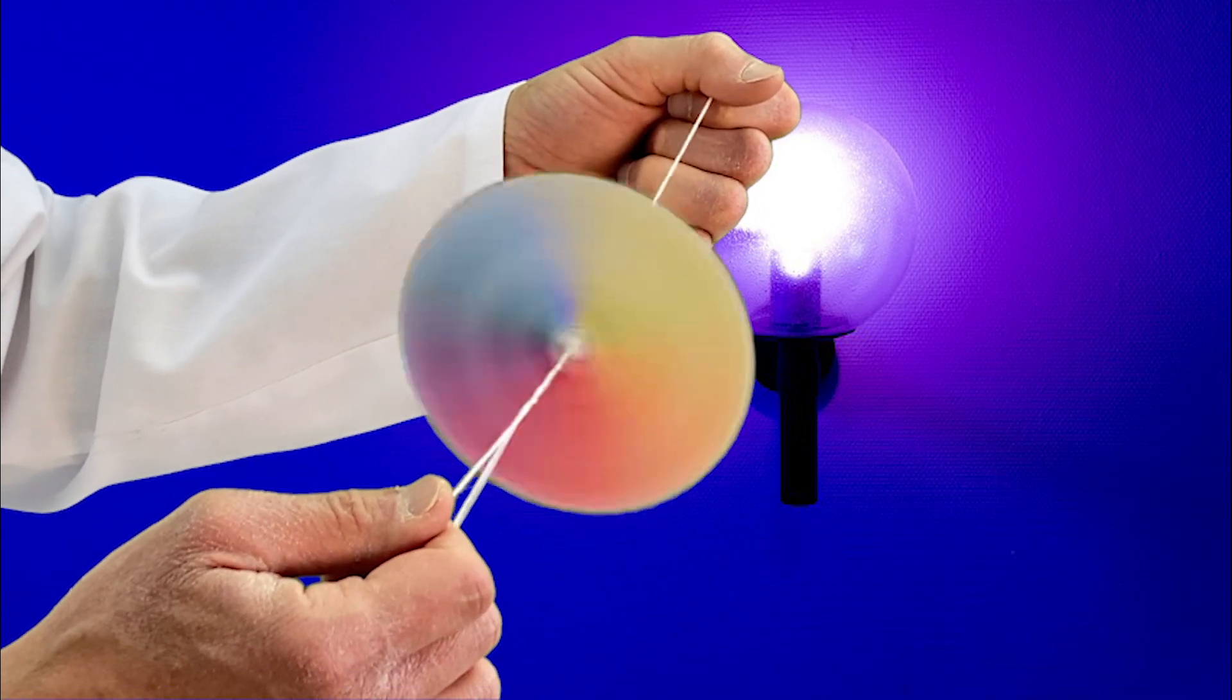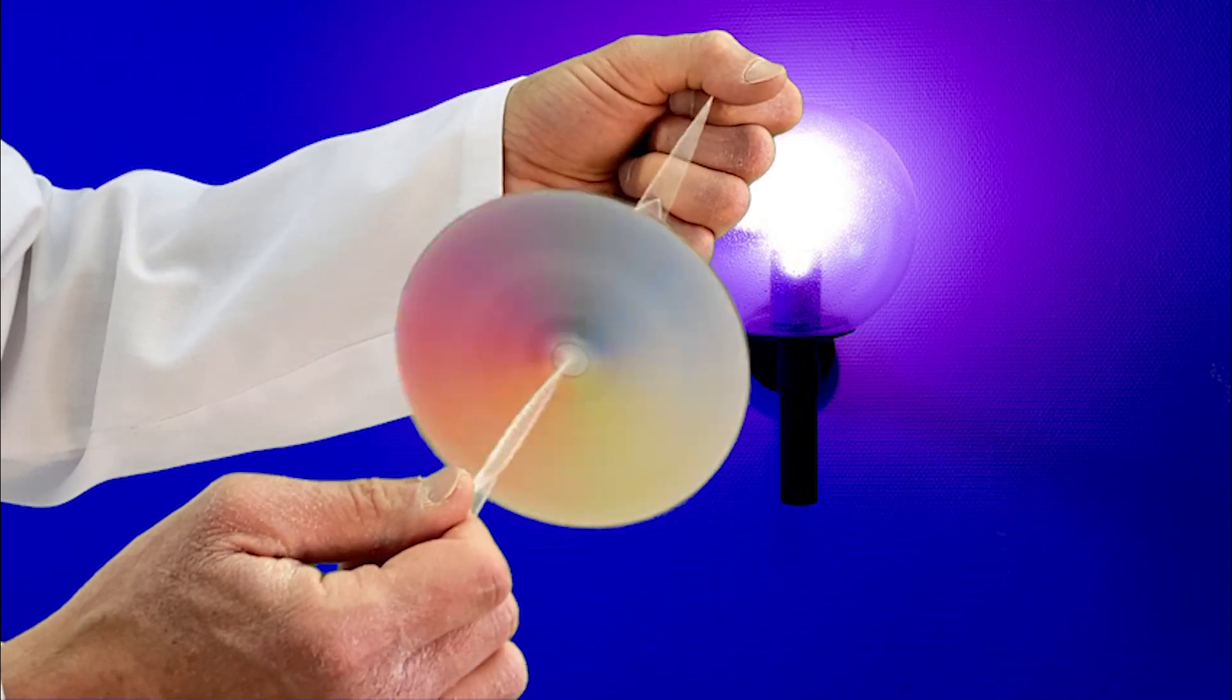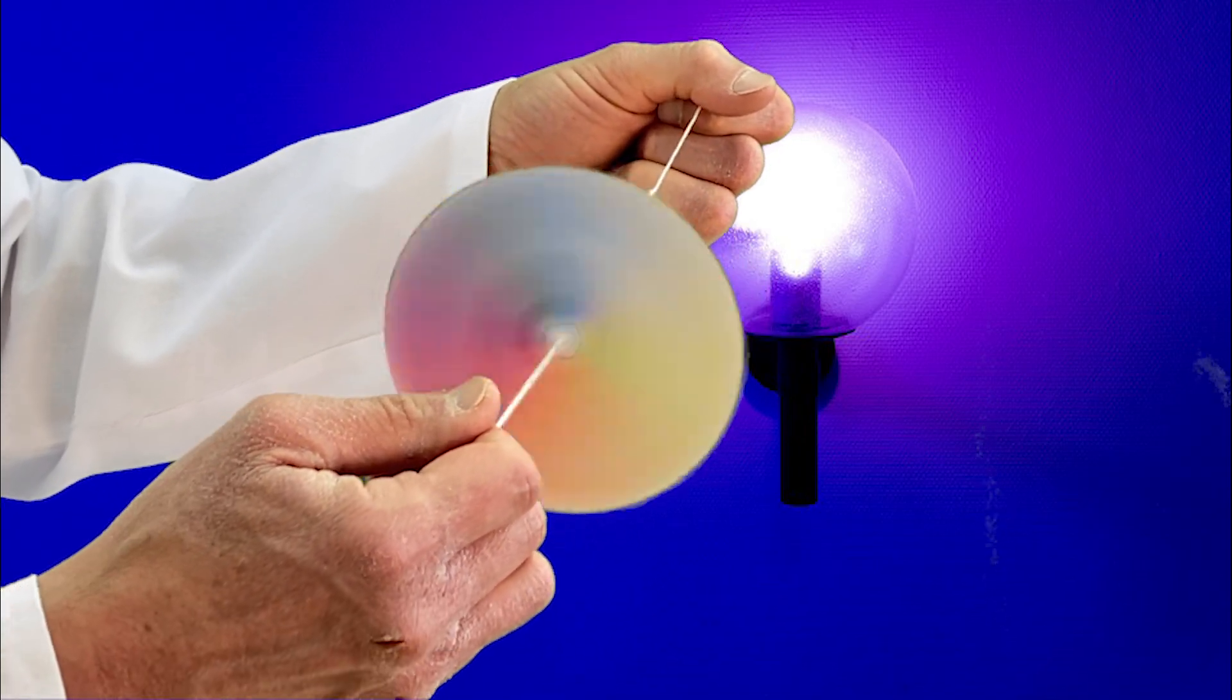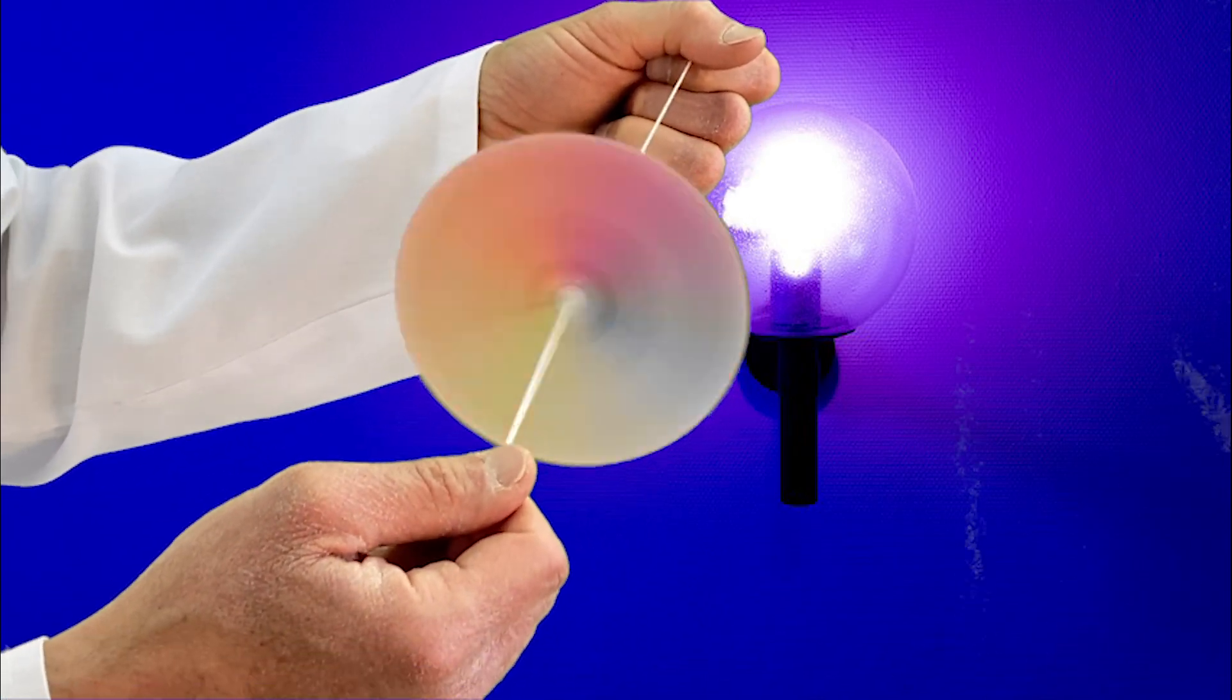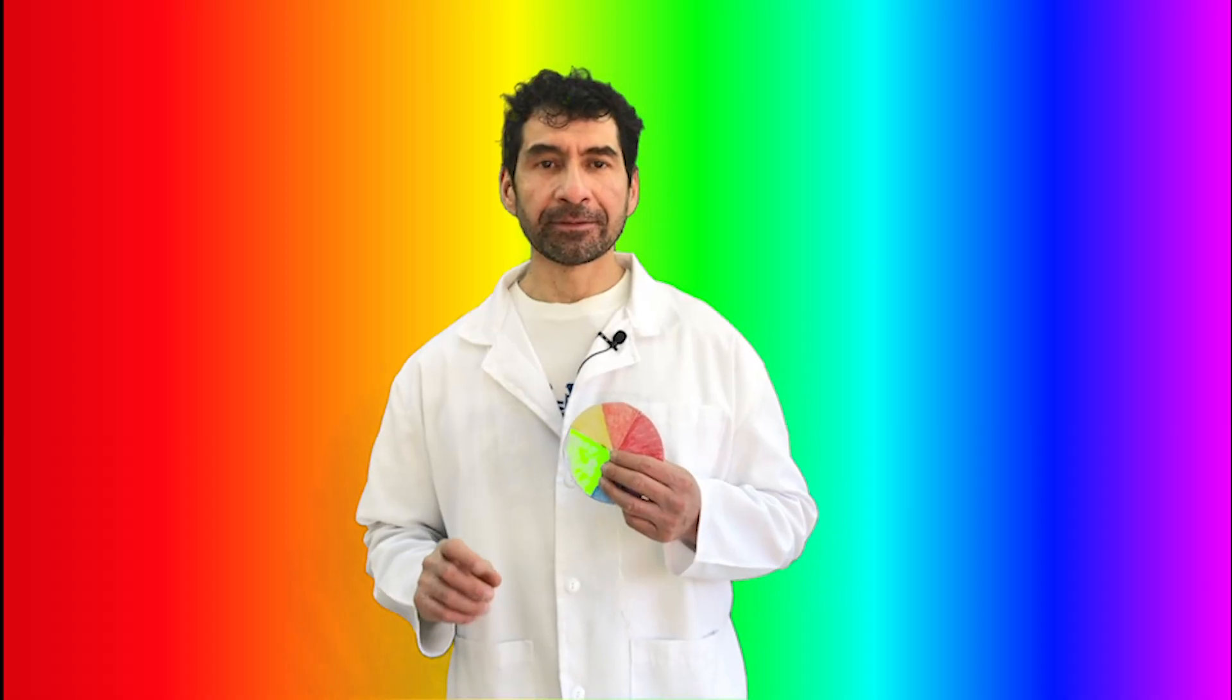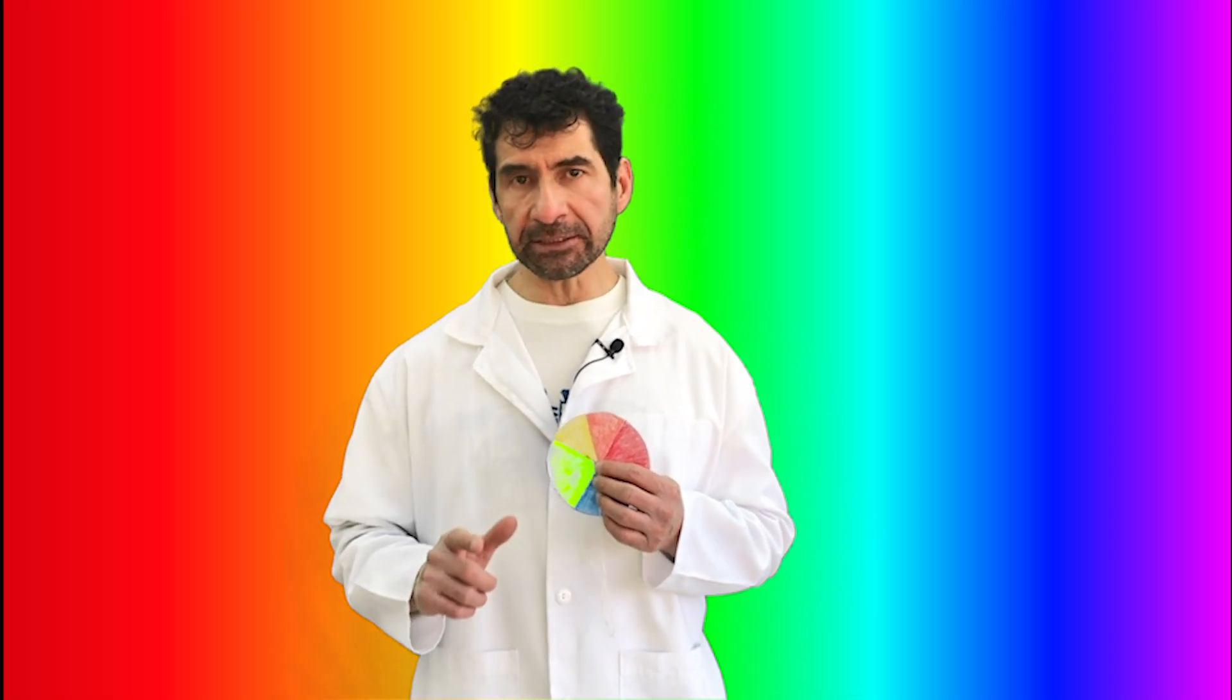When the disk is rotated really fast, the colors fade to white. In this way, Isaac Newton demonstrated that white light is a combination of the seven different colors found in the rainbow. This experiment was final proof that white light is made up of all the colors of the visible spectrum.